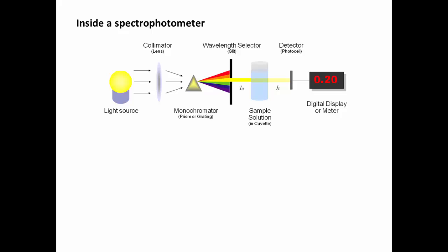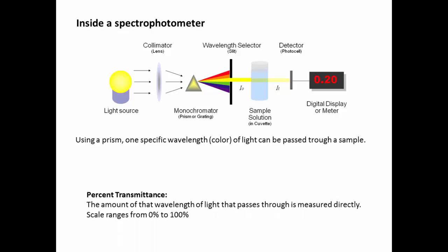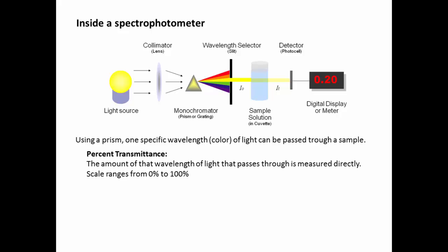Then that light that you select is able to pass through a sample. And then there's some kind of visual light detector on the other side of the sample, which will determine how much of the light actually gets passed through. And then you have a display to show you the result. Using a prism, one specific wavelength of light can be passed through the sample. The machine then is able to read and detect two different types of measurements.